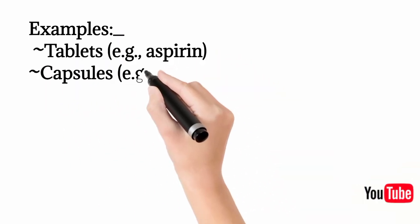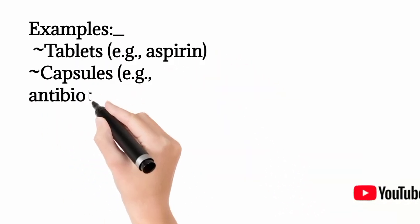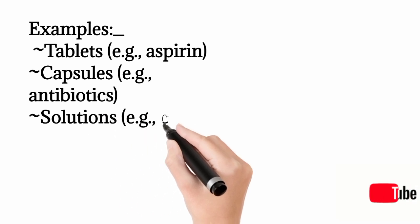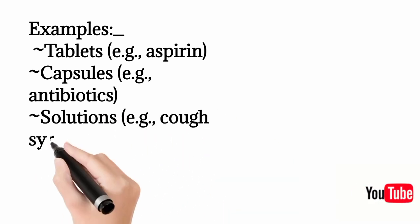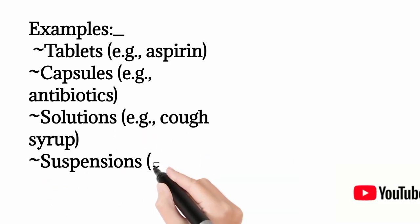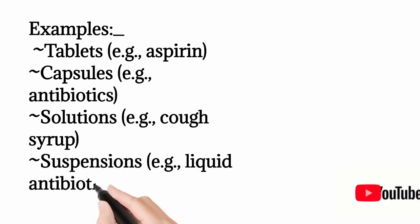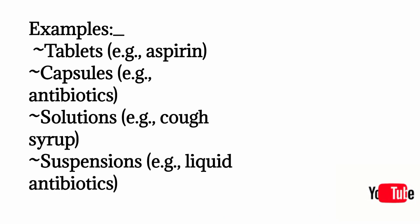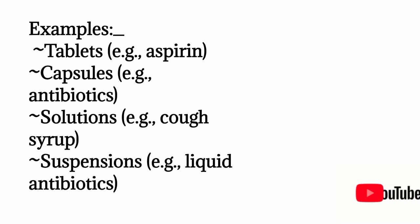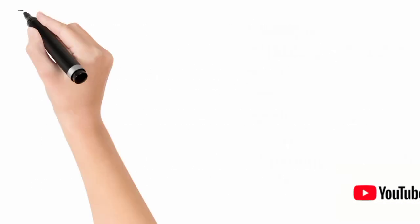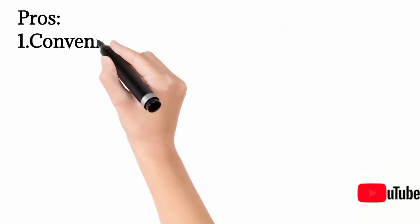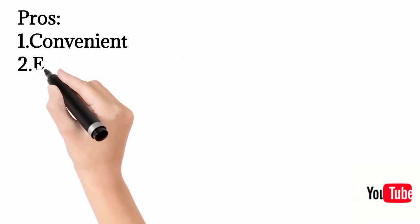Examples of drugs taken by the mouth are solid forms, for example tablets and capsules. These are the solid forms of the drugs which are taken by mouth. Then liquid forms of the drugs, for example solutions, cough syrups, suspensions, liquid antibiotics — so these are the liquid forms of the drugs that can be taken by means of mouth.